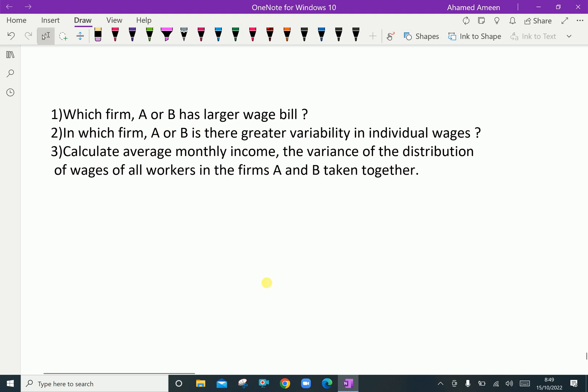Which firm, A or B, has the larger wage bill? For the first answer, wage bill of Firm A is 500 × 186, which equals Rs. 93,000.